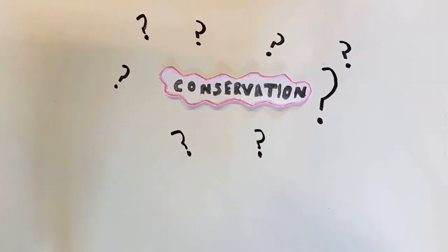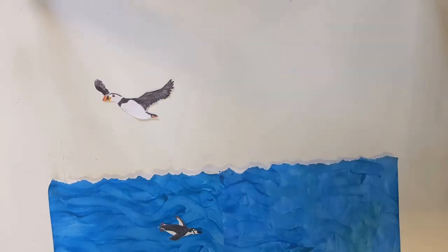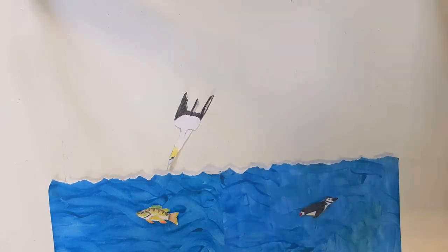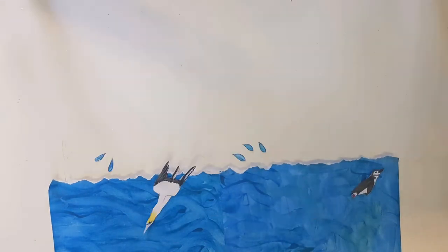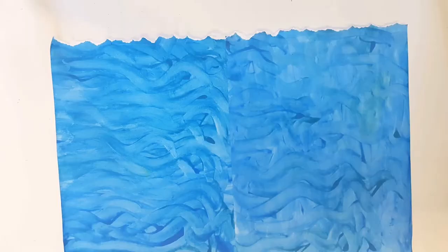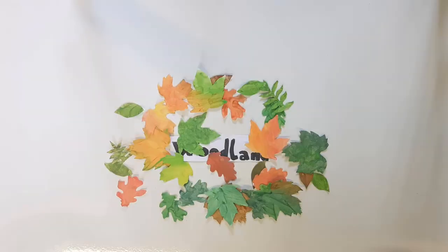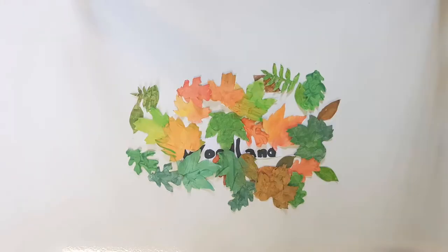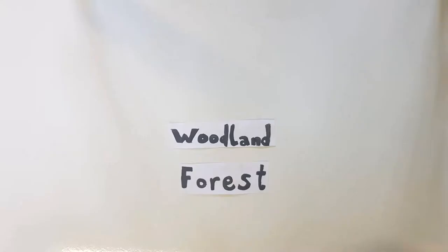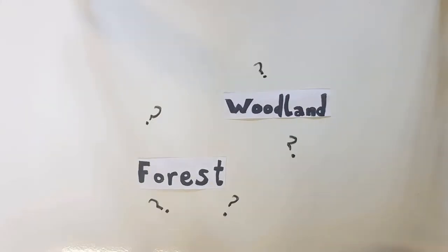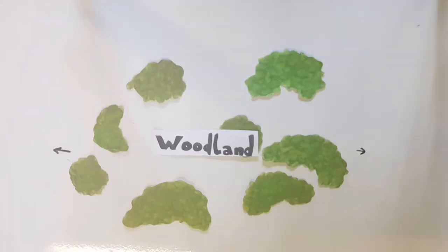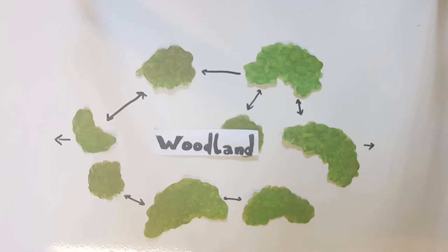In the last video we learned about birds that lived at sea, where the sea was their habitat. In this video we are going to learn about woodlands. Woodlands are a habitat for many animals. You may wonder, is there any difference between woodlands and forests? And the answer is yes — woodlands tend to be smaller than forests and the gaps between the trees are usually quite large.